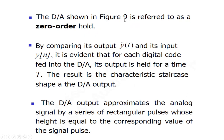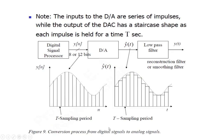The D2A converter shown here is referred to as a zero-order hold D2A converter. By comparing its output Y cap T and its input Yn, it is evident that for each digital code fed into the D2A converter, its output is held for a time capital T. The D2A output approximates the analog signal by a series of rectangular pulses, whose height equals the corresponding value of the signal pulse. After passing these pulses through the reconstruction filter, I will be able to get the original analog signal back.